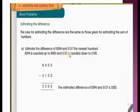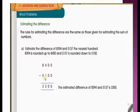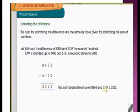And 5,137: is 137 nearest to 100 or 200 children? Yes, it is nearest to 100. So it rounds down to 5,100. Now 8,400 minus 5,100: 0, 0, 0, 0; 4 minus 1 is 3; 8 minus 5 is 3. So the estimated difference of 8,394 and 5,137 is 3,300.